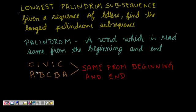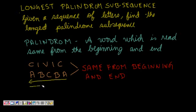Civic reads the same from beginning: C-I-V-I-C, and from the end also: C-I-V-I-C. Another example is A-B-C-B-A, which reads the same from both directions. So this is a palindrome.